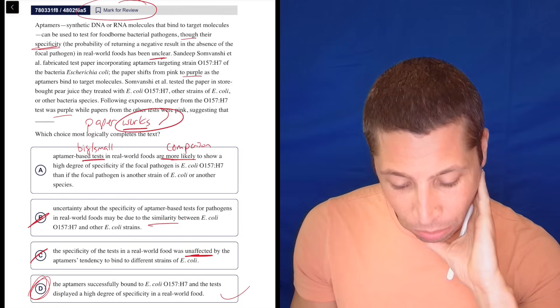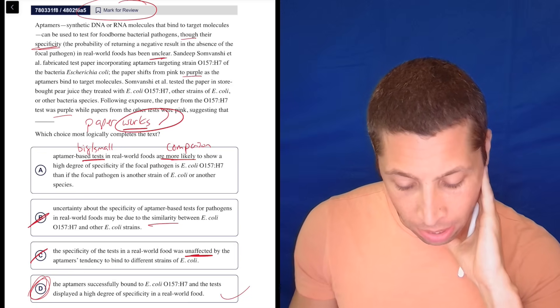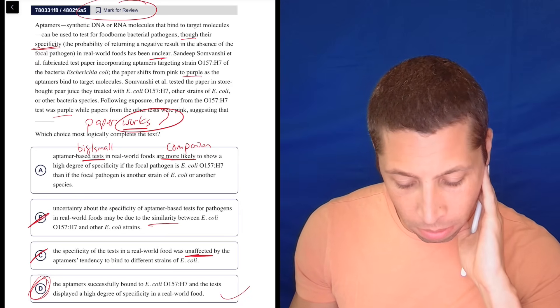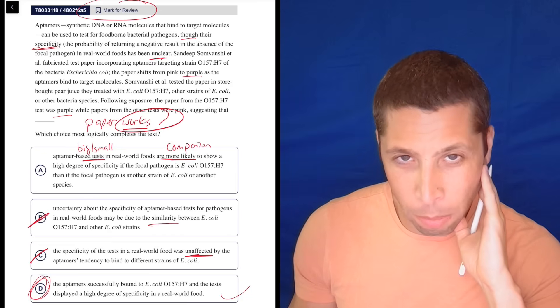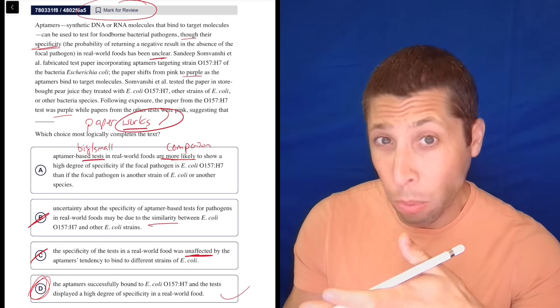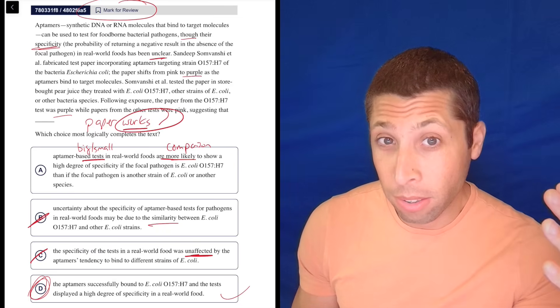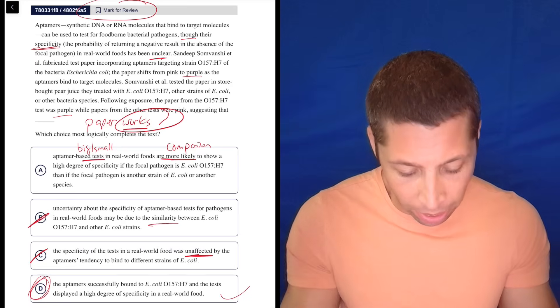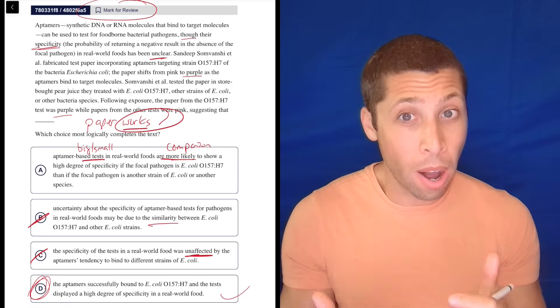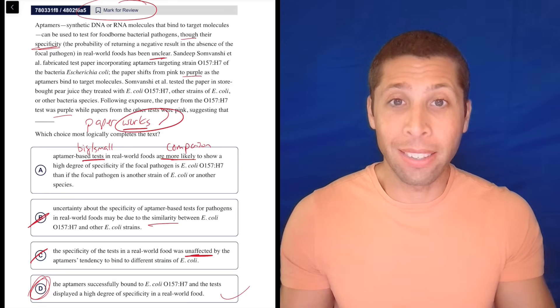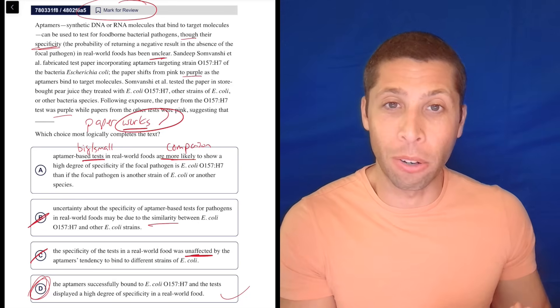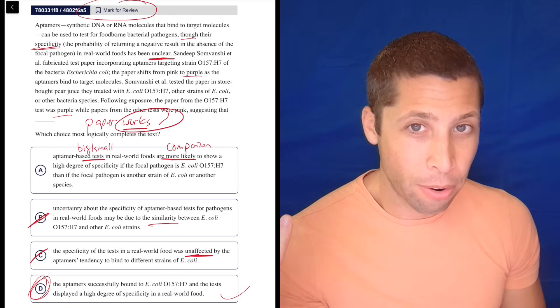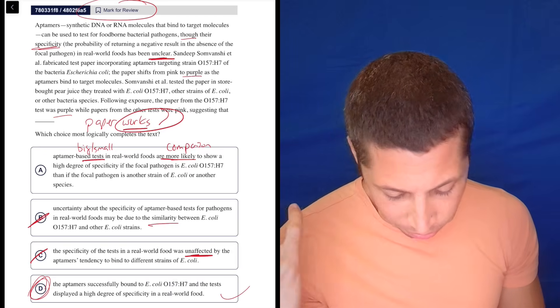Maybe I'm falling for a trap, but I'm pretty sure I'm right. And then if I have more time, I will come back to this and try to understand this aptamer specificity thing a little bit more. Since it's a video and I can do as much time with this question as I want, let's take a look. These aptamers can be used to test for foodborne bacterial pathogens, though their specificity probability in real world foods is unclear, meaning the probability of returning a negative result in the absence of the focal pathogen. Well, a negative result in the absence of the focal pathogen, meaning the focal pathogen, the one that we're focusing on, isn't there. So wouldn't we want it to not have a positive result? Wouldn't we want a negative result? This doesn't seem like a bad thing.